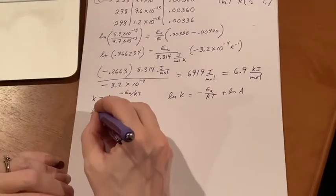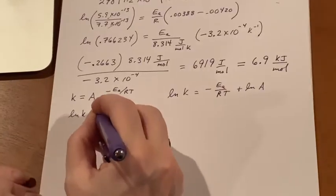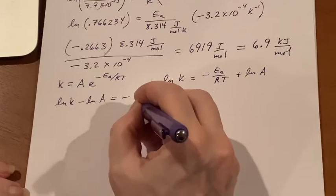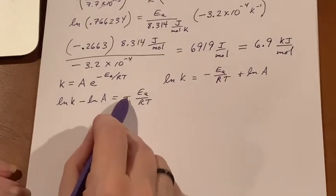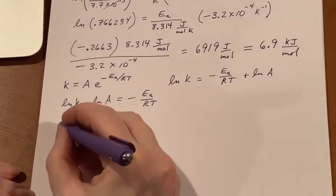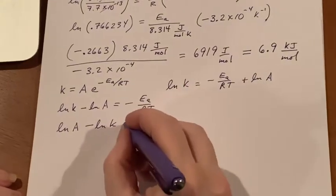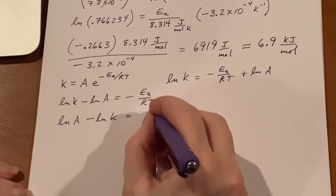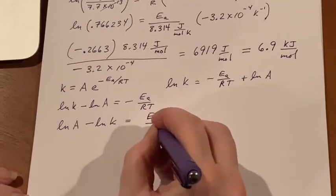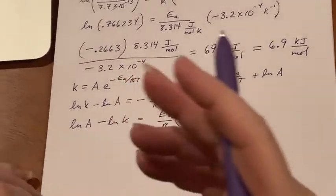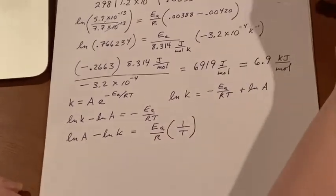I could do it from logarithm of k equals minus Ea over RT plus the logarithm of A. So I could say that logarithm of k minus logarithm of A is negative Ea over RT. Let's get rid of this by switching the order here: natural log of A minus natural log of k would be equal to Ea over R times one over T.